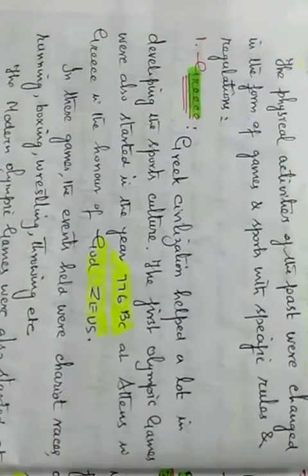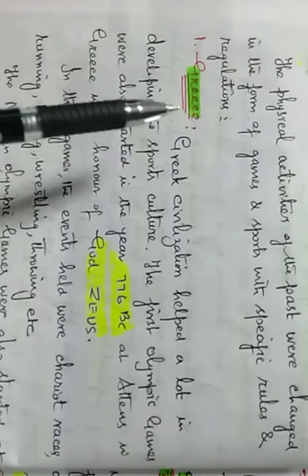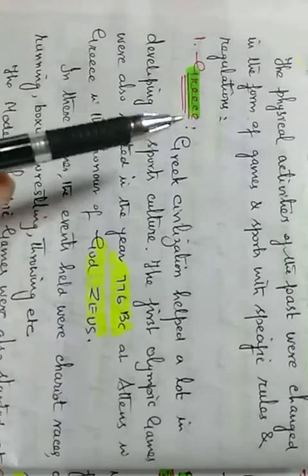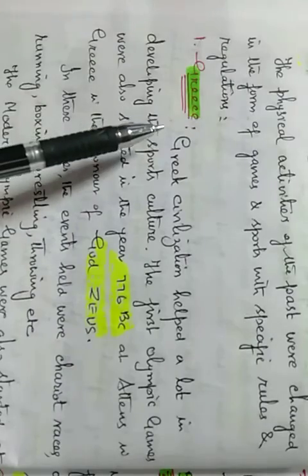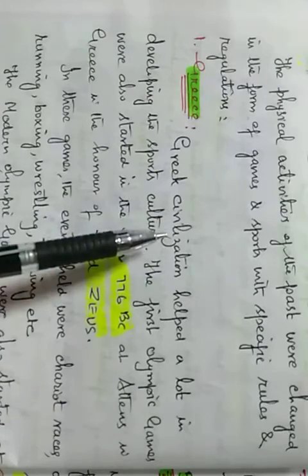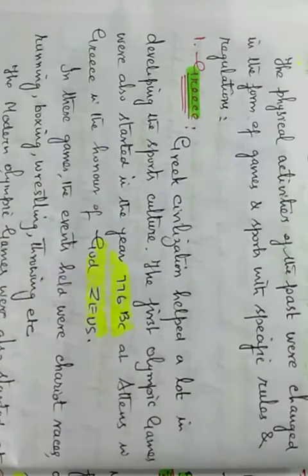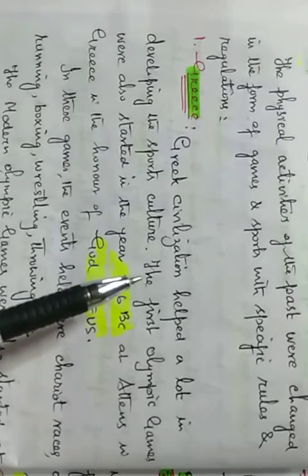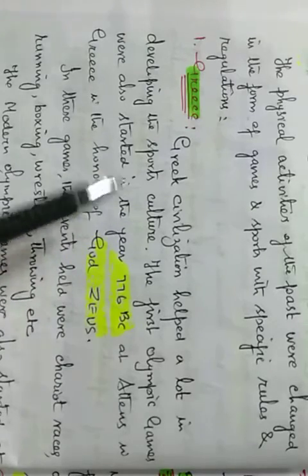We have to study what contribution Greece has made, Rome has made, England has made, America has made, Germany has made, China has made. In developing sports, Greece came first. Greek civilization helped a lot in developing the sports culture. Greek Civilization, as the Indus Valley Civilization and Roman Civilization, has helped to create the sport culture.